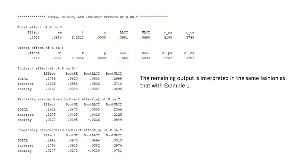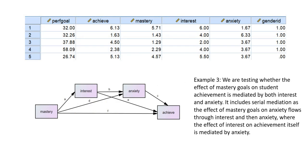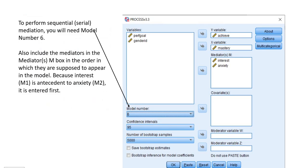For example 3, we move into sequential mediation, with the effect of mastery on achievement flowing through interest and then anxiety. Path B reflects a sequencing where interest serves as a predictor of anxiety. When we multiply paths A, B, and C, we capture that sequential mediation. To perform sequential mediation, we change the model number to model 6 and include the mediators in the mediator box in order — interest first, then anxiety, since interest precedes anxiety.